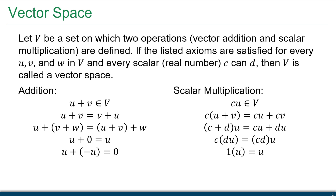The next two properties are distributive and link addition and multiplication together. If I have a scalar c and two vectors u and v and add those vectors then scale them, I end up in the same place as scaling each vector individually then adding. Similarly, if I have two scalars and a single vector, I can add the scalars then scale, or scale independently then add the resulting vectors.